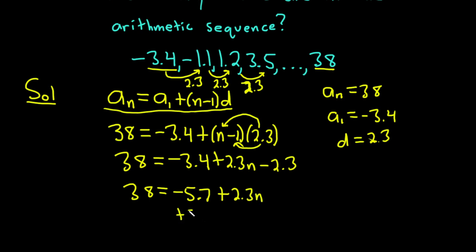We can add 5.7 to both sides. We end up with 38 plus 5.7 which is going to give us 43.7 and that's equal to 2.3 n. Let me just clean that up. 43.7 equals 2.3 n. So now we have to solve for n. So we divide by 2.3. I'm going to put this in a calculator to see what it is.